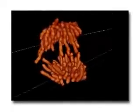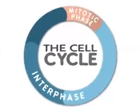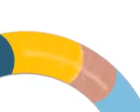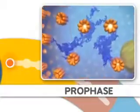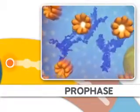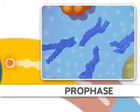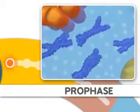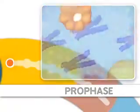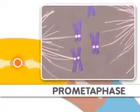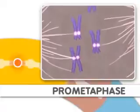Mitosis is the process of dividing the duplicated DNA of a cell into two new nuclei. Mitosis is split into distinct stages. The first stage is prophase, where the DNA condenses, organizes, and the classic chromosome structure appears. Next comes prometaphase, where microtubules attach to the chromosomes.